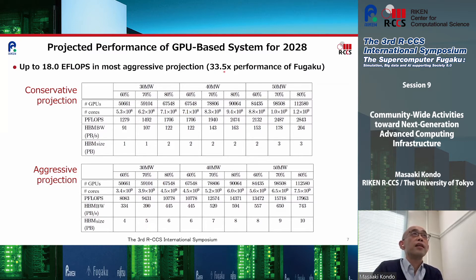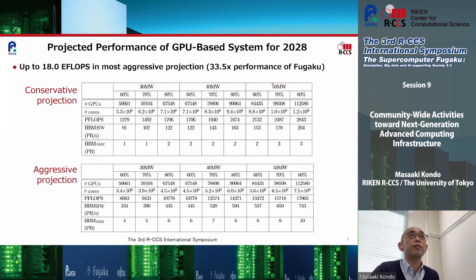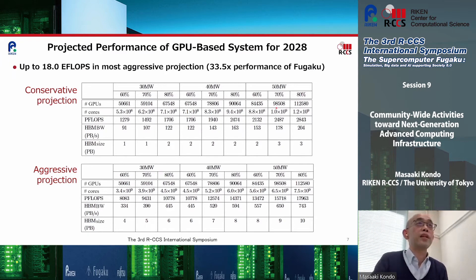So assuming very aggressive parameters — 50 MW and 80% of power budget for computing — we can achieve more good performance. As a result, we think we have a lot of work to do for the future development of next generation systems.